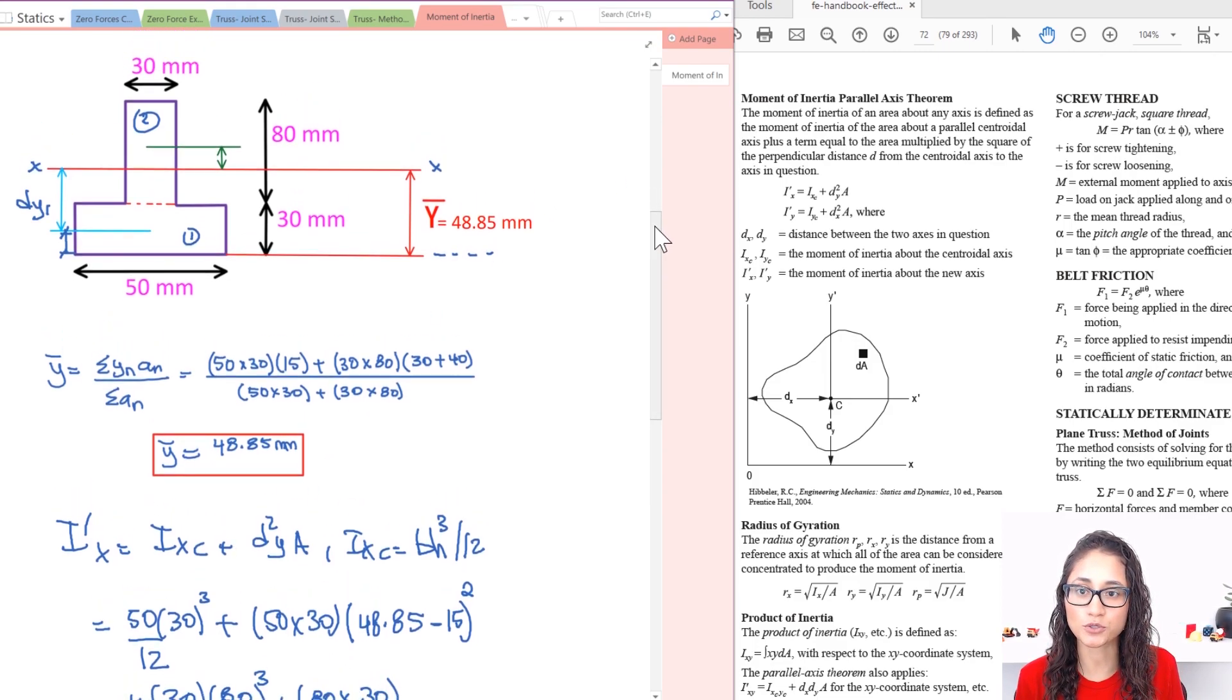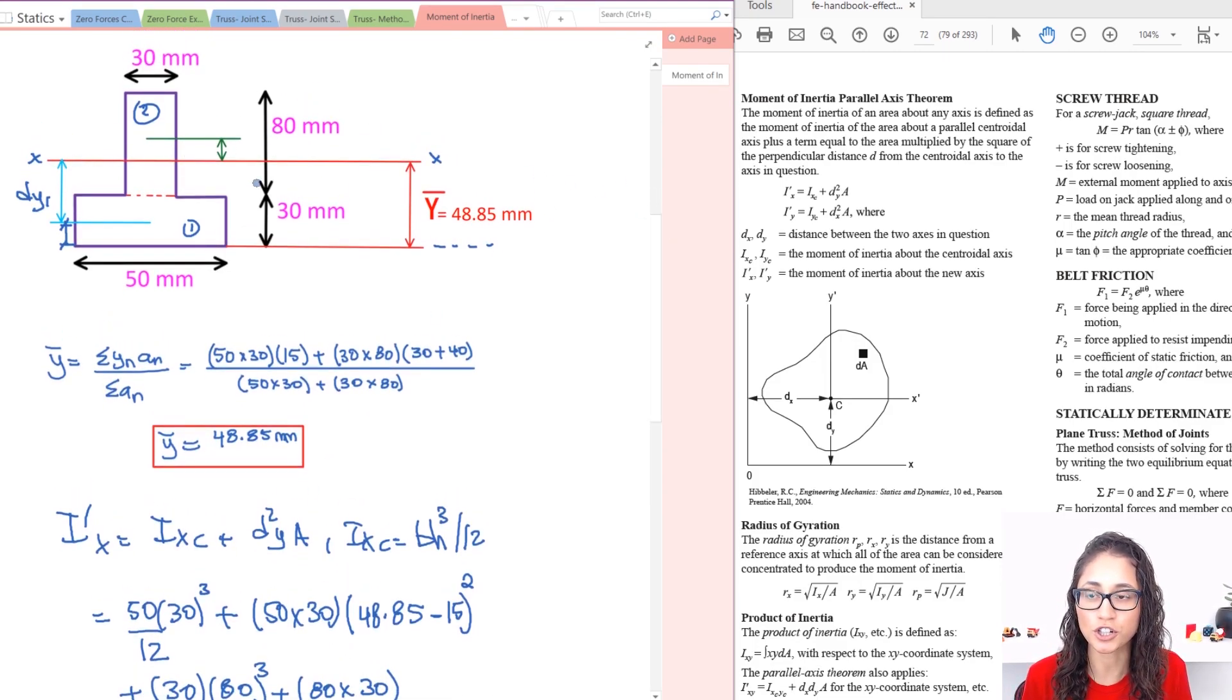And now what we want to do, again, same thing as earlier. So we want to do the centroid of this portion right here, of this member, to the centroid wherever my centroid is. So it's going to be this distance. So this is my dy2. So we calculated in the previous video, we said that this distance from here to here is 70, right? It's right here, it's this one. This is 70.